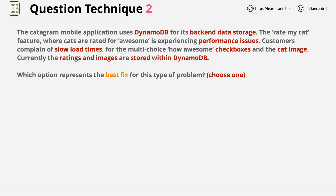Perhaps the most important element of this question is the statement that ratings and images are both stored within DynamoDB. You learned earlier in the course that for DynamoDB all interactions are based on items in a table — no matter what you read or write, you always read or write an item, and the maximum size of an item within DynamoDB is 400KB. Images, even when resized and compressed, tend to be on the larger side, so storing large cat images in DynamoDB jumps out as a potential problem.